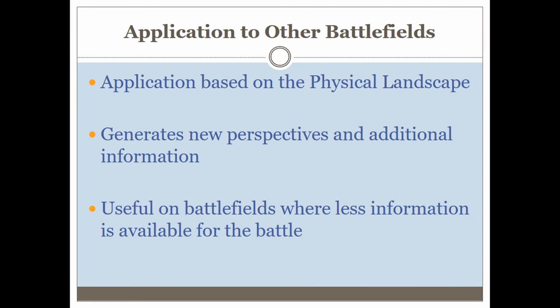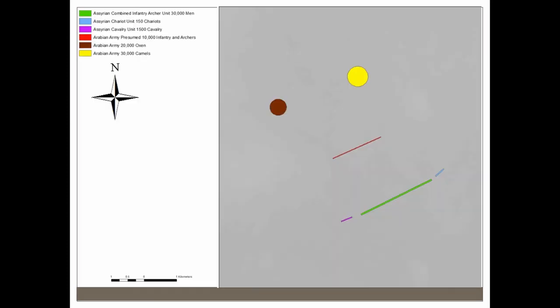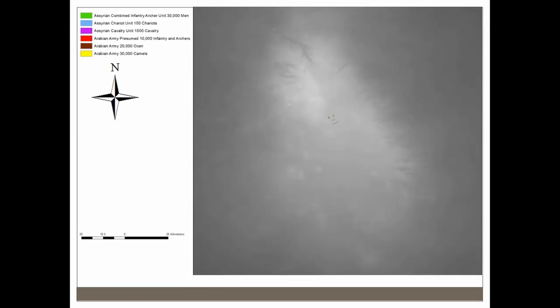The second case study involves a battlefield about which we know relatively little. It took place during the time of Tiglath-Pileser III, an Assyrian king, and one of the queens of the Arabs. Using a size-based analysis, the units are placed in the landscape — infantry, chariots shown in purple, and large groups of herding animals. A key question was whether they would fit within the landscape, and the answer is yes — they take up an absolutely minuscule amount of space.